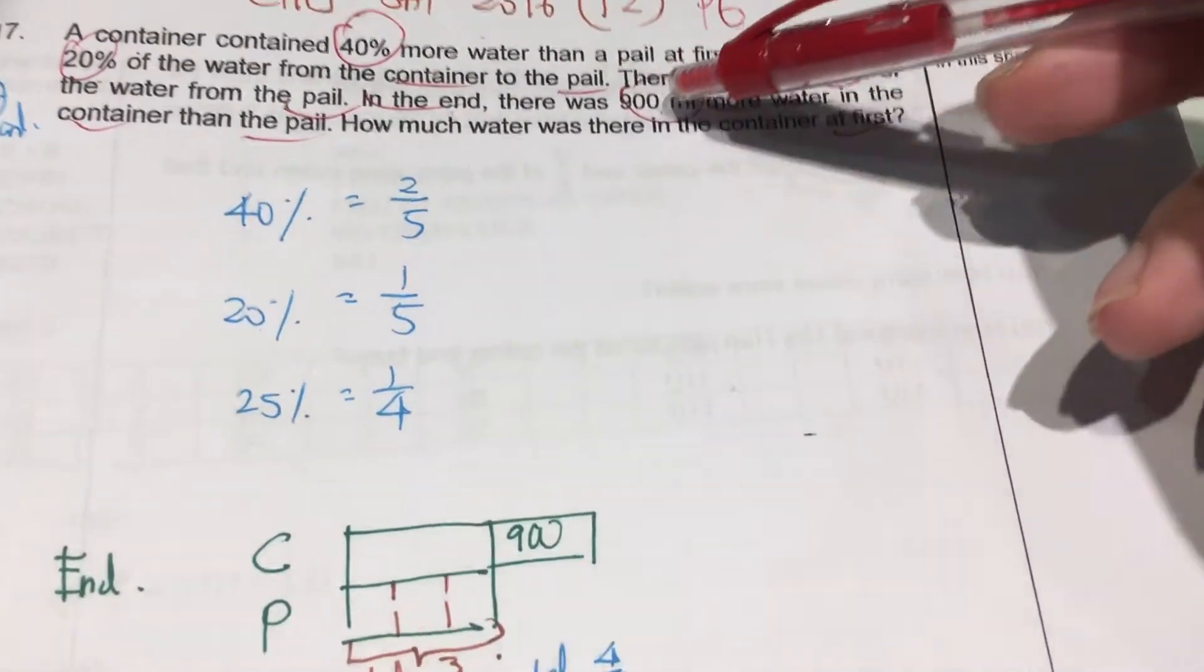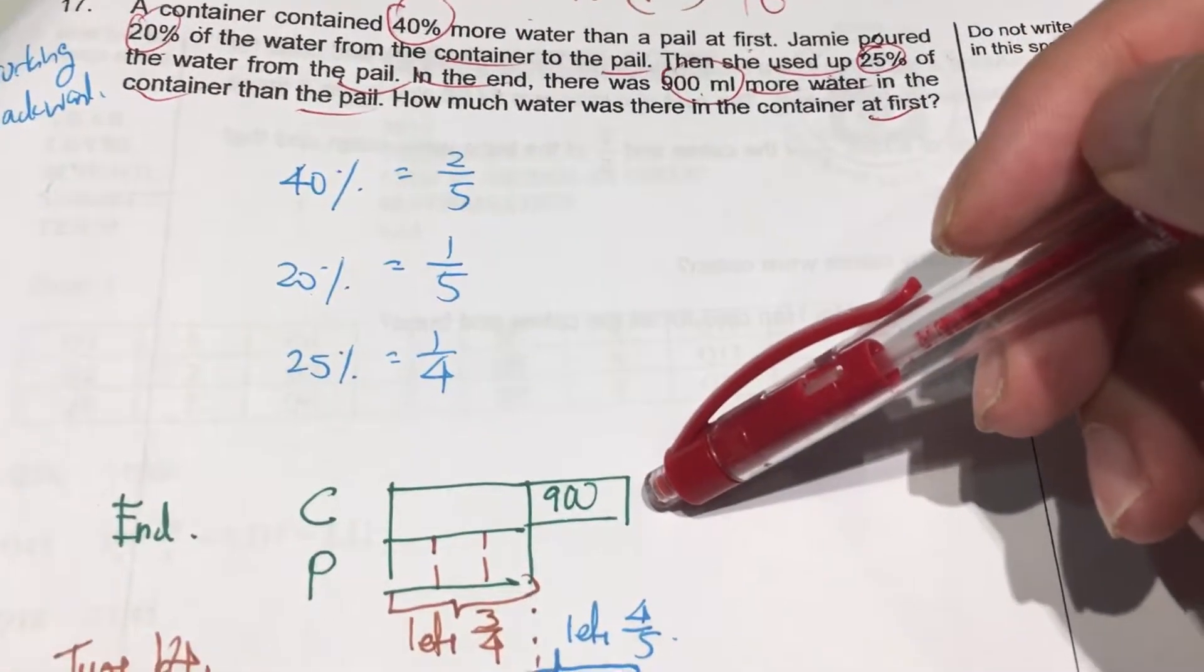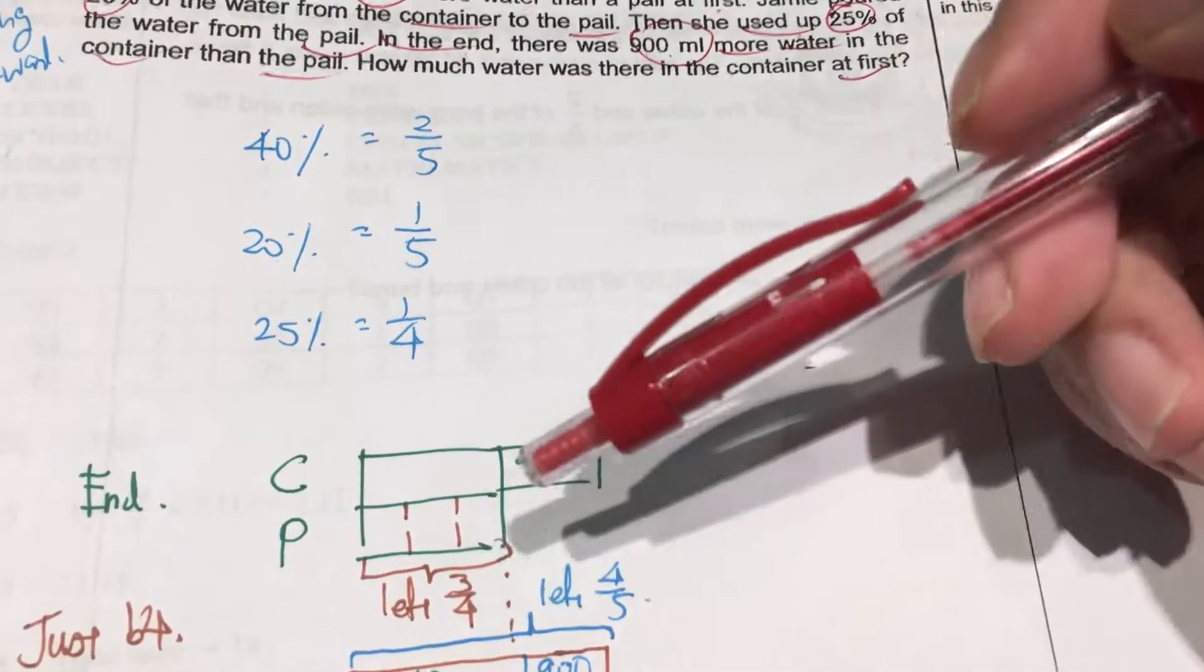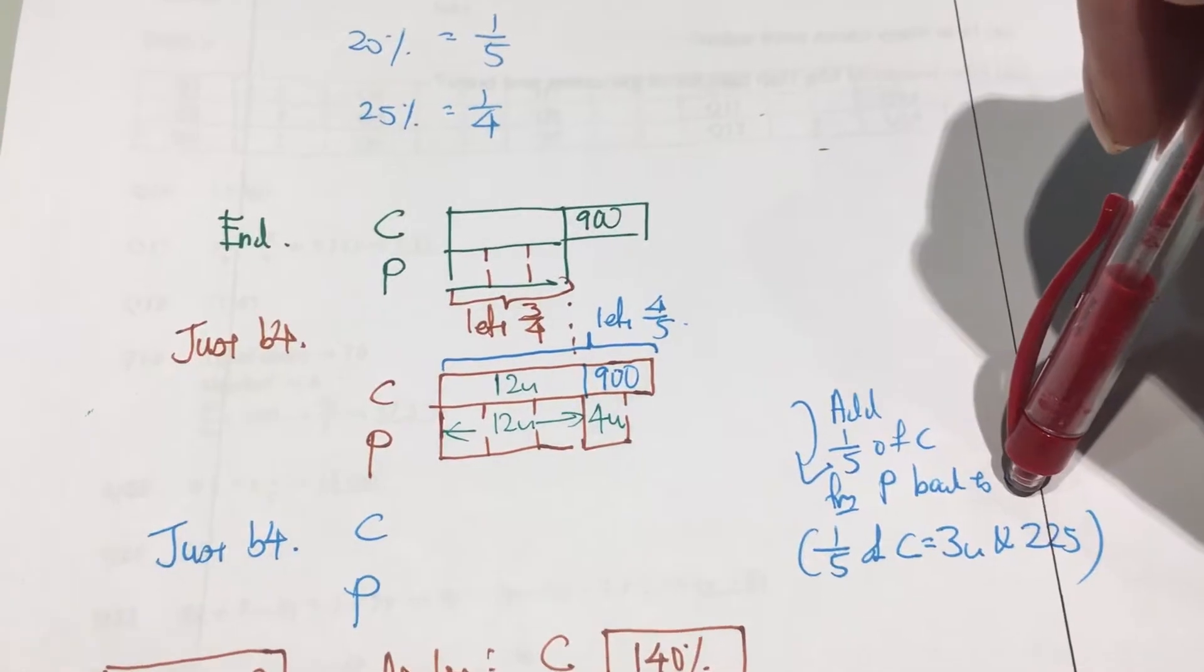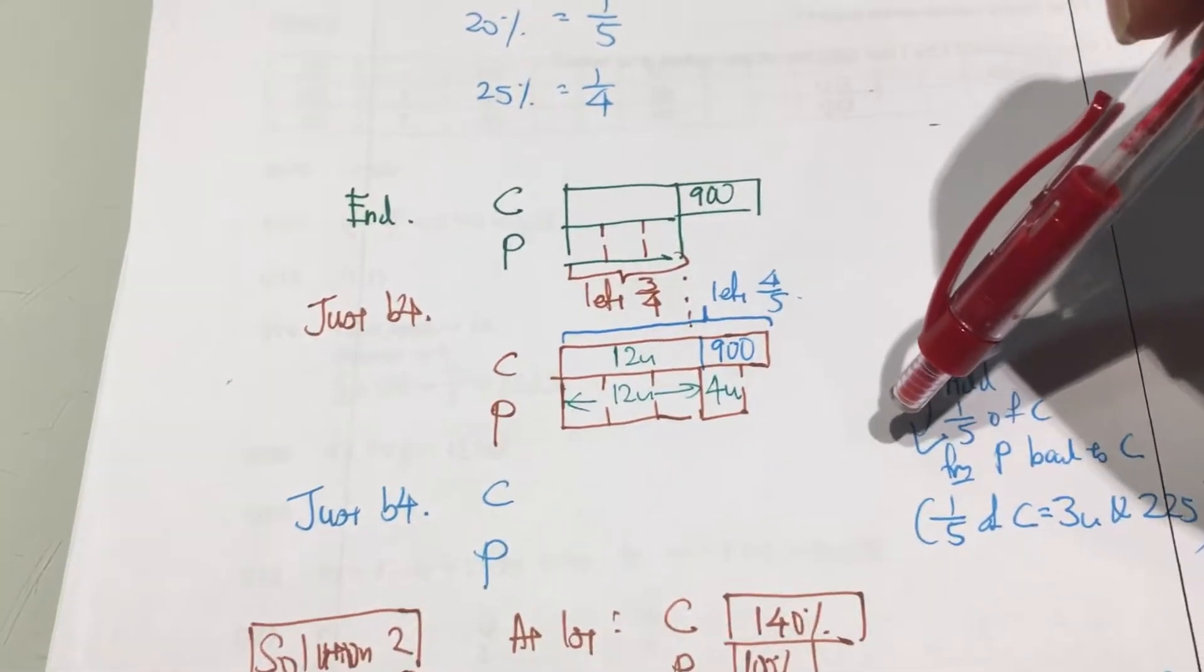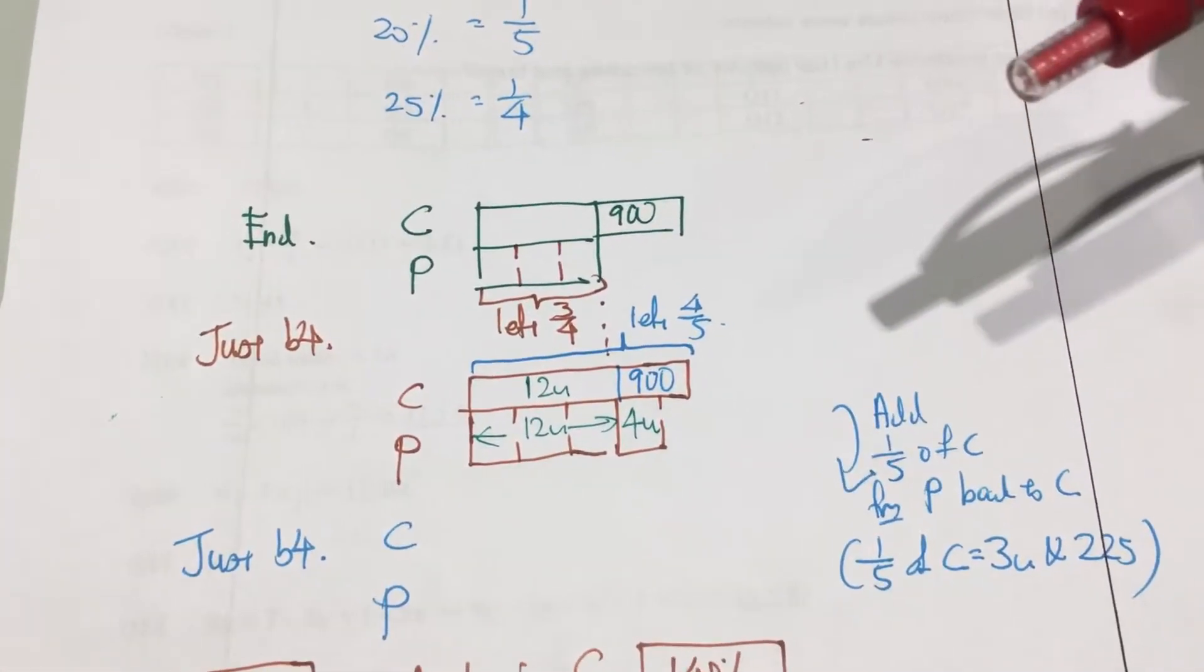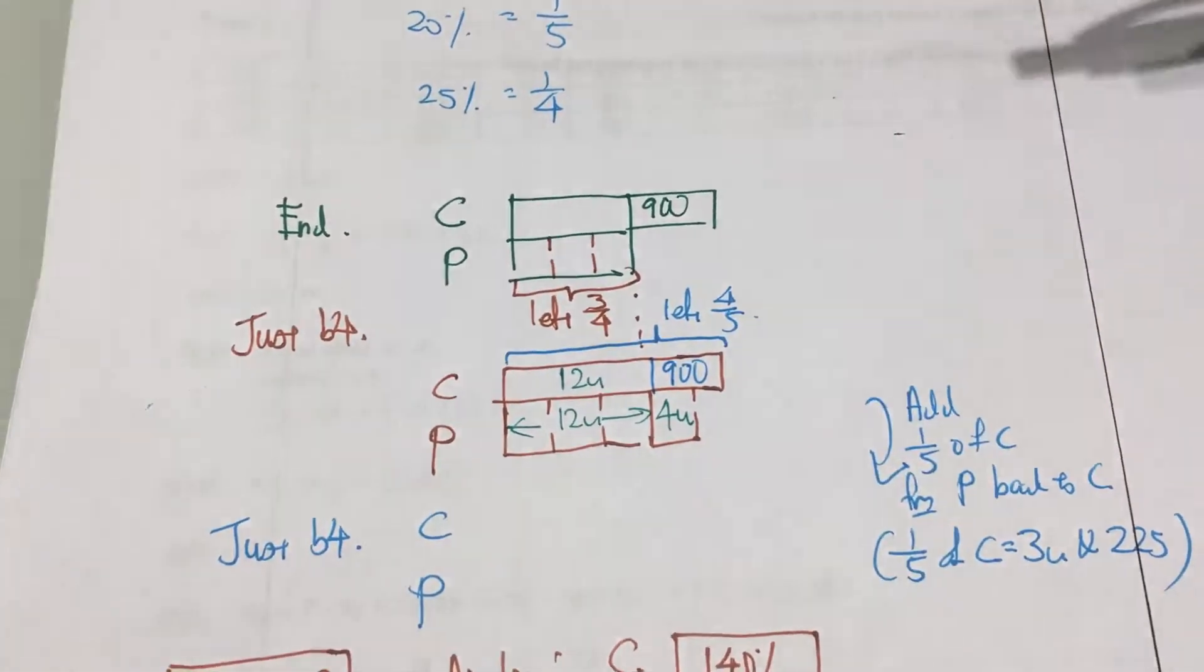You can see me drawing like, in the end, there were 900 ml more water in the container than the pail. I started to work backwards and I realized that I am actually stuck. So after deciding for about one minute to continue or to let it go, I found that I am still stuck. So I decided to try another approach.